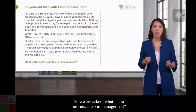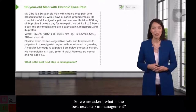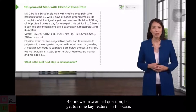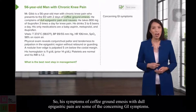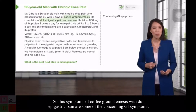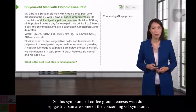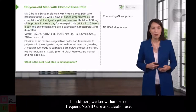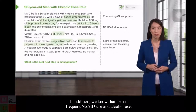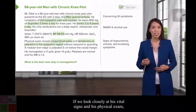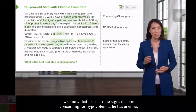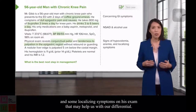We are asked what is the best next step in management. Before we answer that question, let's get to some key features in this case. His symptoms of coffee ground emesis with dull epigastric pain are some concerning GI symptoms. In addition, he has frequent NSAID use and alcohol use. Looking closely at his vital signs and physical exam, he has signs concerning for hypovolemia, anemia, and some localizing symptoms on exam.